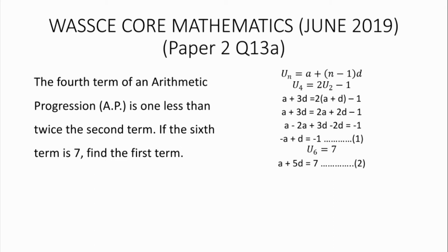Solving the two equations simultaneously using the elimination method, we multiply Equation 1 by 5, which gives us minus 5a plus 5d equals minus 5. We name that Equation 3.